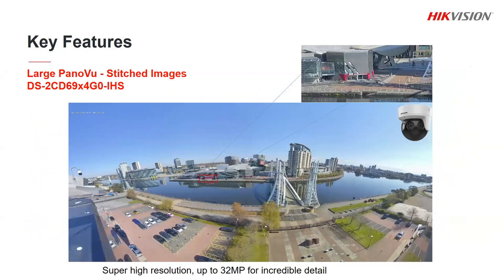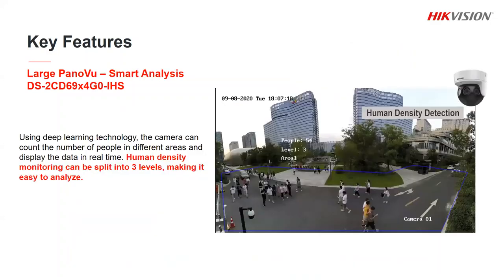Now onto the larger PanorViews — these give us the stitched images. You can see here the top of the range 32 megapixel version and just how much detail you can get if you choose to zoom in. It's a massive wide area but we can zoom in to get an immense amount of detail. The large PanorViews also have some smart analysis features. Here's one example: human density analysis.